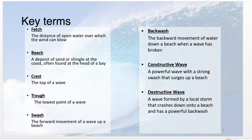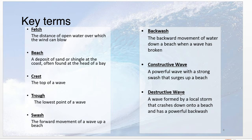Here are some more key terms for this inquiry question. Fetch is the distance of open water over which the wind can blow — waves are made by wind. The main types of waves are constructive and destructive. Constructive waves add sediment to a beach; they have a strong swash and a weak backwash. Destructive waves take things away from the beach or cliff — they have a strong backwash and a weaker swash.